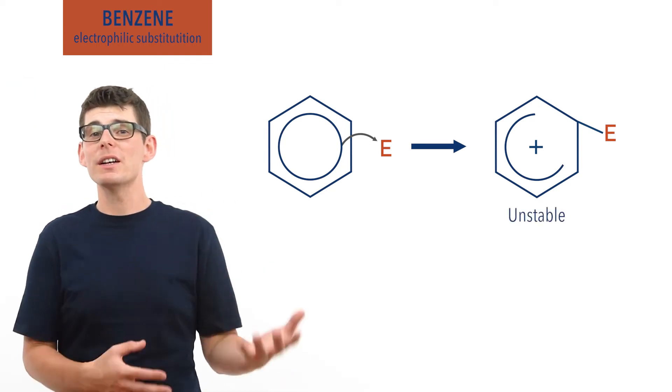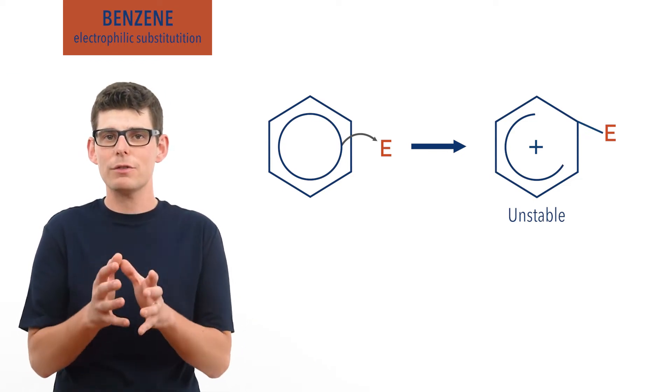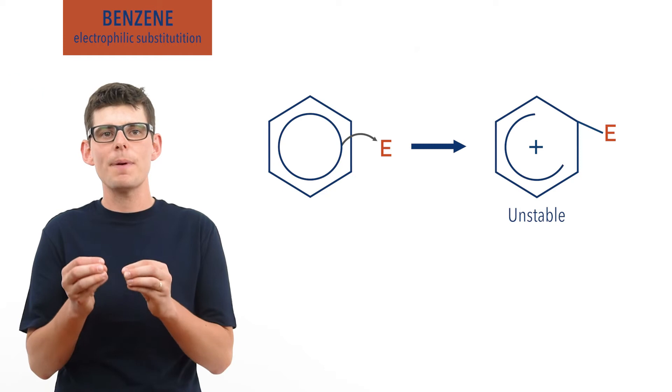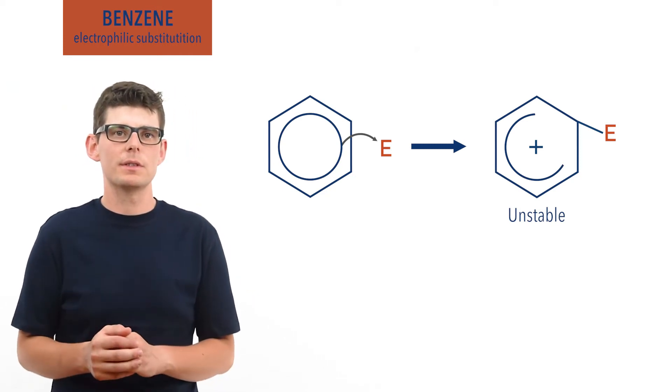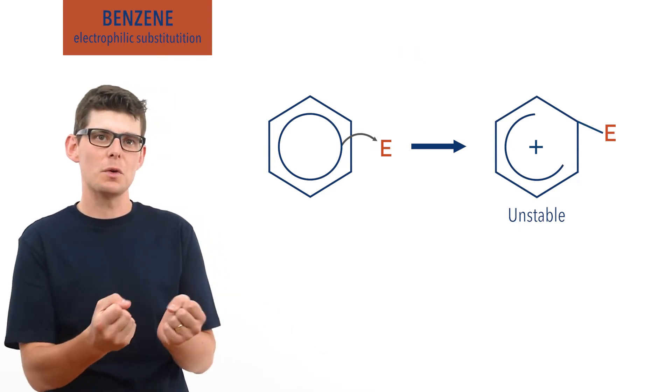So, to return to a full delocalized system and become stable again, the carbon that made a bond with the electrophile needs to give another pair of electrons back to the broken system, almost repaying the delocalized system for the two electrons that it stole before.